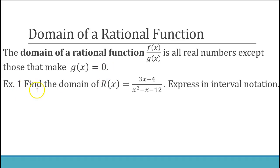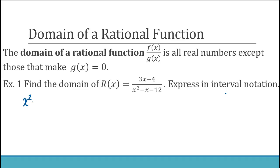In this first example, find the domain of r(x) equals (3x minus 4) over (x squared minus x minus 12), expressed in interval notation. We only need to consider the values that make the denominator equal to zero, so we take the denominator, which is the quadratic x squared minus x minus 12, and find where it equals zero.